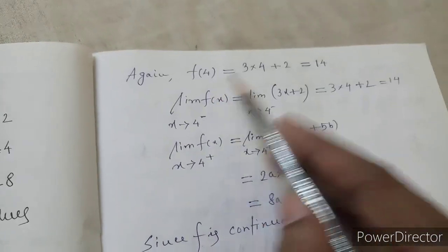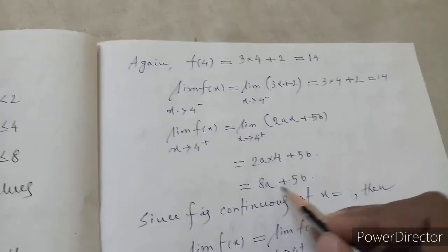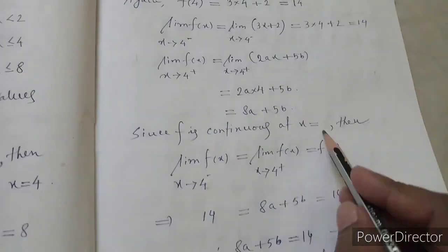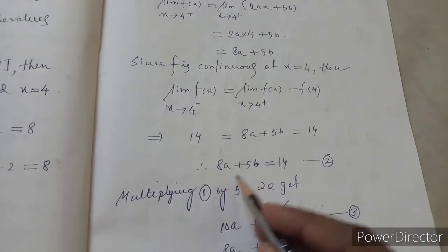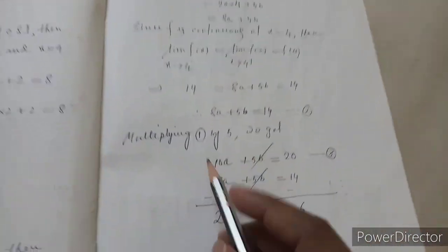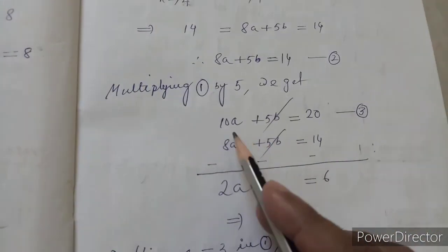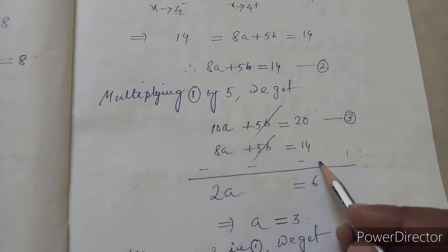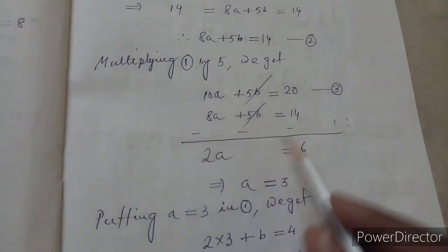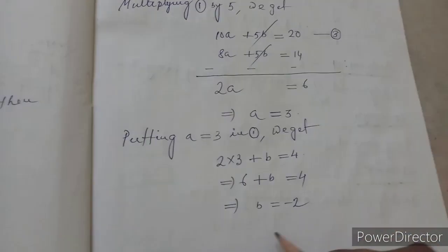Since f is continuous at x equal to 4: f(4) equals 14, and the right-hand limit equals 8a plus 5b. So 8a plus 5b equal to 14, which is equation two. Multiplying equation one by 5 gives 10a plus 5b equal to 20, equation three. Subtracting equation two from equation three: 2a equals 6, so a equals 3. Substituting a equal to 3 into equation one: 6 plus b equals 4, so b equals minus 2.